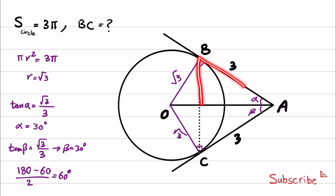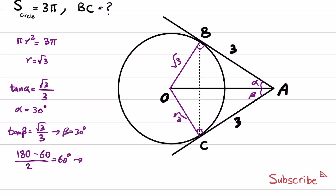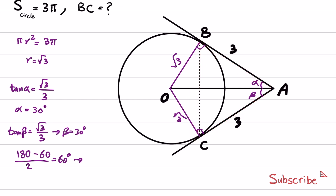So this angle is 60, this angle is 60, and this is also 60. If a triangle has three angles of 60 degrees, all sides are equal to each other — in other words, we have an equilateral triangle. In such a triangle all sides are equal, therefore BC equals AB equals AC, which equals 3.